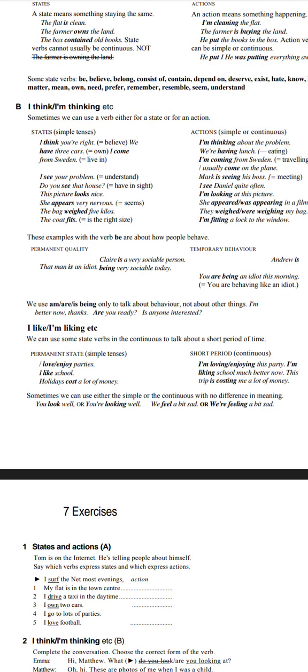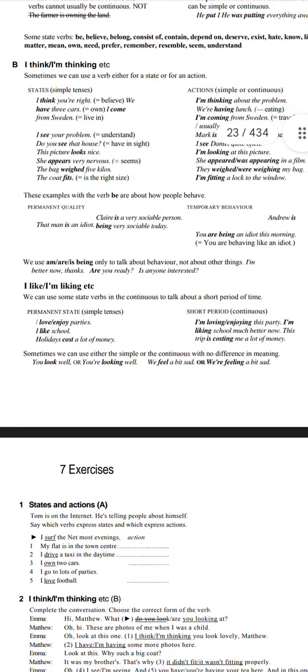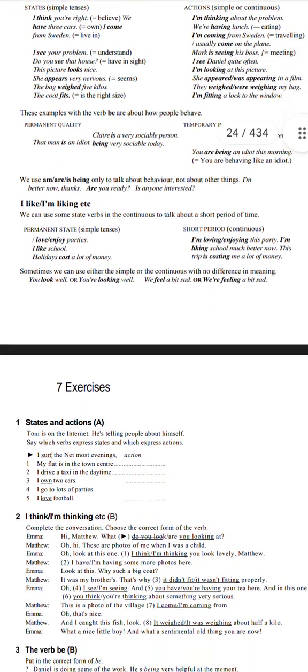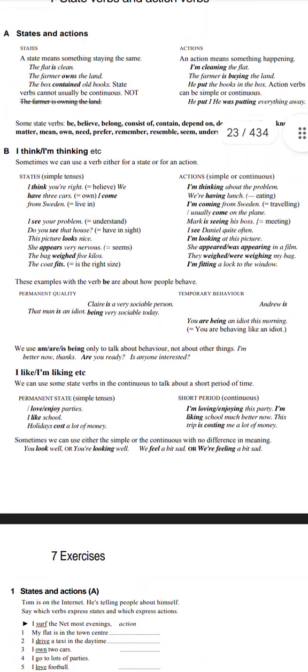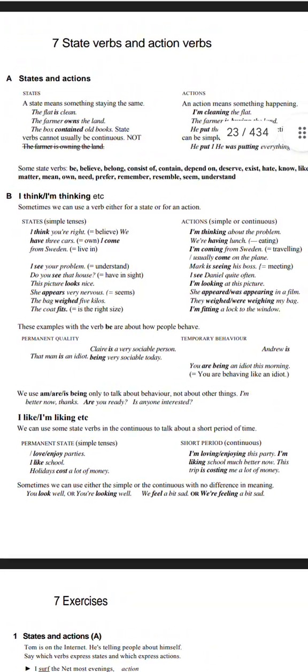Clear is very sociable. The man is an idiot. Being very sociable, you are being an idiot. You are behaving like an idiot. These are all sentences. This is a very easy topic. I don't think I need to explore more.